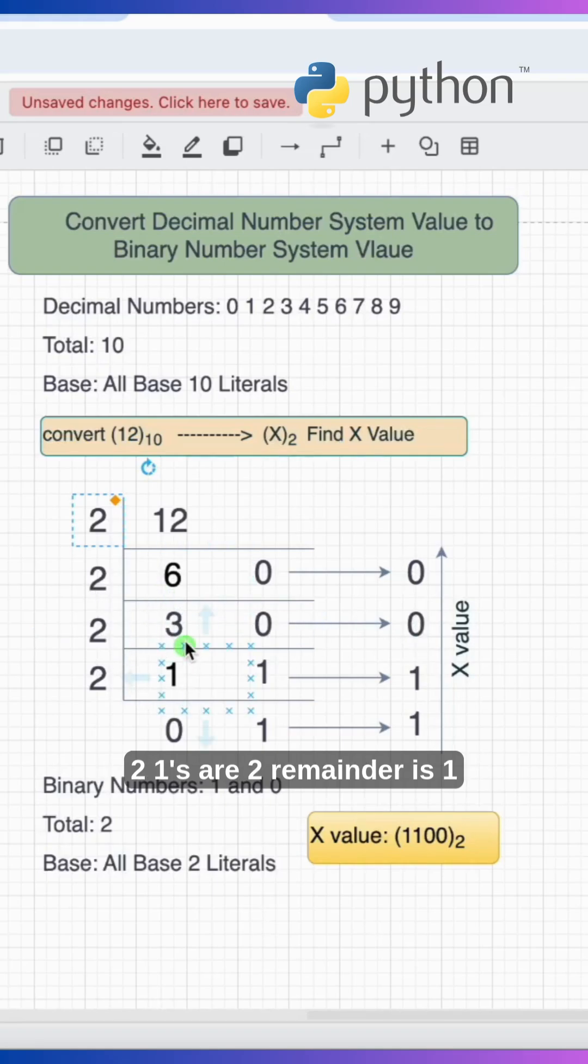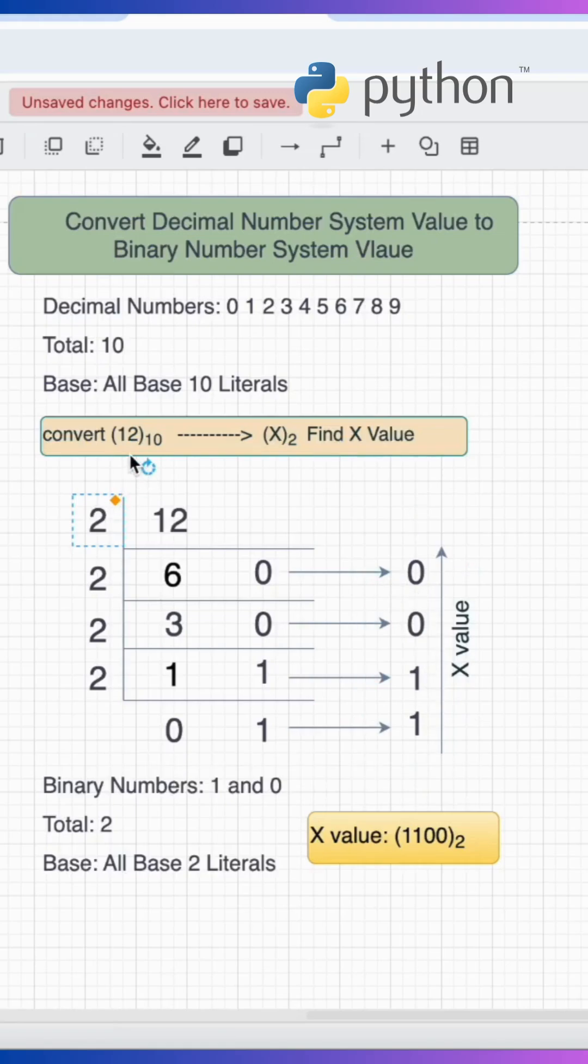2 goes into 3 one time with remainder one, and finally 2 into 1 gives zero with remainder one. So this one will become here - that is the binary value of 12. This is how you need to explain it to the interviewer.